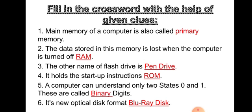Now, second one. The data stored in this memory is lost when the computer is turned off. It is RAM. At the bottom, see, 2 is written over there. From top to bottom, write there, RAM.